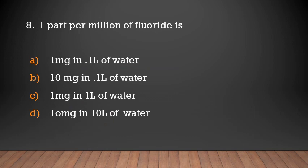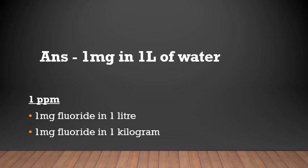1 part per million of fluoride is: 1mg in 0.1L of water, 10mg in 0.1L of water, 1mg in 1L of water, or 10mg in 10L of water? Answer: 1mg in 1L of water. 1 ppm equals 1mg fluoride in 1 litre, or 1mg fluoride in 1 kg.